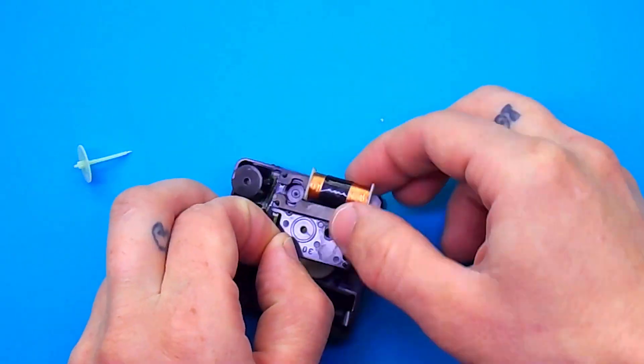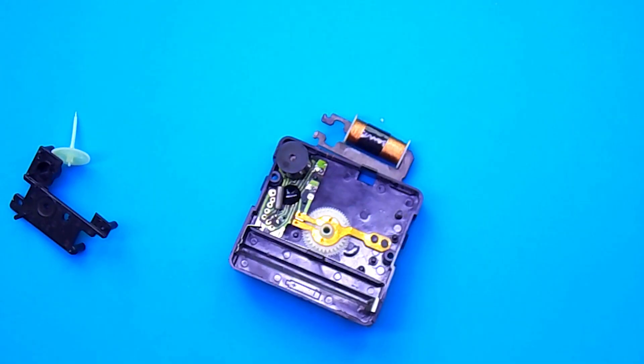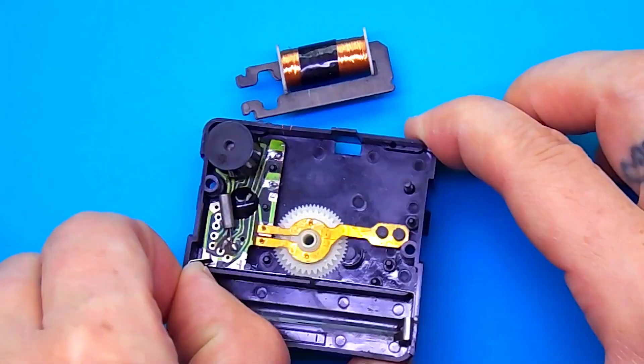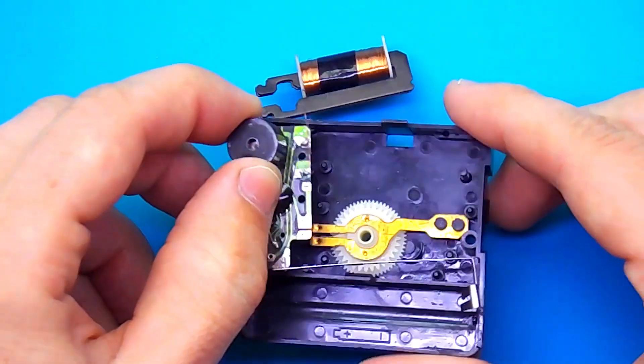First you need to open the case, and then pull out everything superfluous. Then there will be a coil, a board, and clips for the battery. We also take these things out.